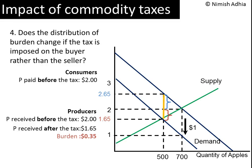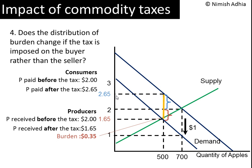What net price will the buyers pay? They paid the equilibrium price of $1.65 to the sellers, but in addition they must pay $1.00 tax to the government since the tax is now collected from them. So the net price they pay is $1.65 plus $1, which is $2.65 — that is $0.65 more than before the tax, so $0.65 is their burden. Now this is the moment of truth: recall that this was the burden of taxation in the previous example as well, when the tax was collected from the seller rather than the buyer.